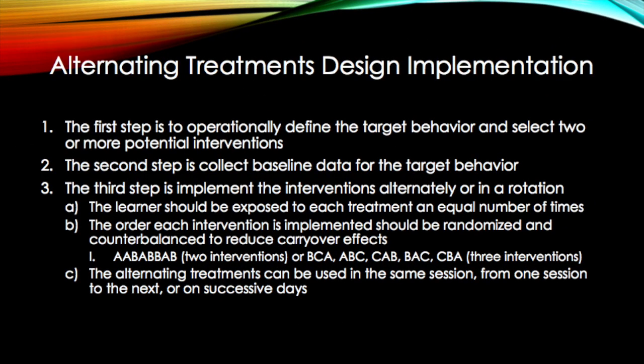To successfully implement an alternating treatments design, the first step is to operationally define the target behavior and select two or more potential interventions. The second step is to collect baseline data for the target behavior.